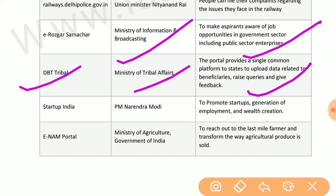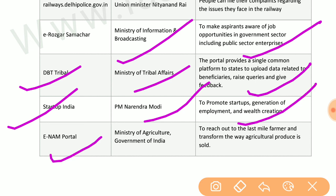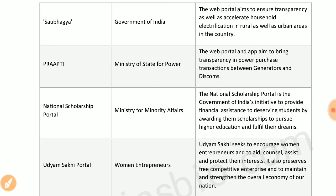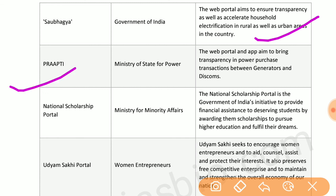DBT Tribal by the Ministry of Tribal Affairs provides a single common platform for states to upload data related to beneficiaries. Startup India by the Prime Minister promotes startups, employment generation, and wealth creation. eNAM portal by the Ministry of Agriculture reaches the last-mile farmer and transforms the way agricultural produce is marketed. Saubhagya by the government of India ensures transparency and accelerates household electrification in rural and urban areas.